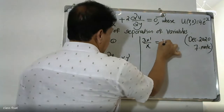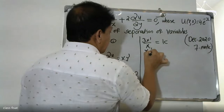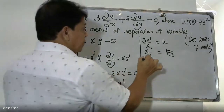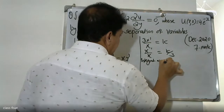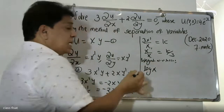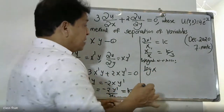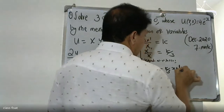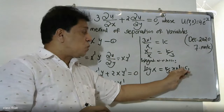From the x-side: 3·X'/X = k, so X'/X = k/3. Integrating both sides with respect to x, since the numerator is the derivative of the denominator, we get log X = k/3·x + log c1, where c1 is the constant of integration.